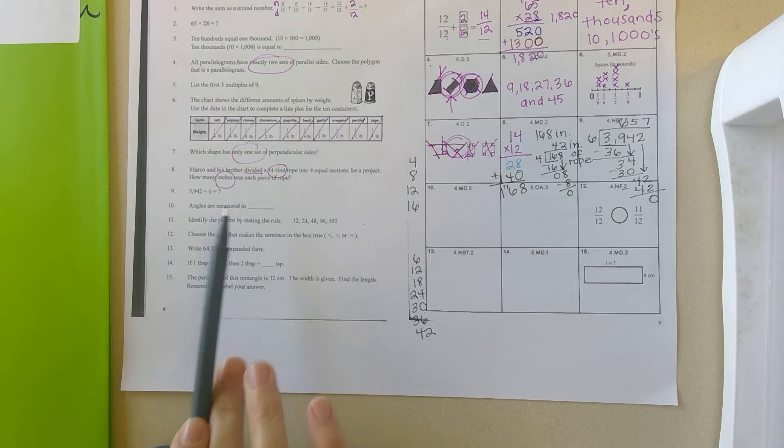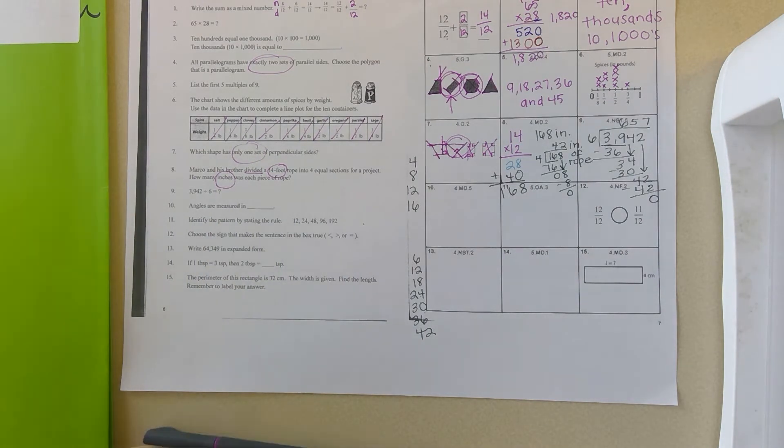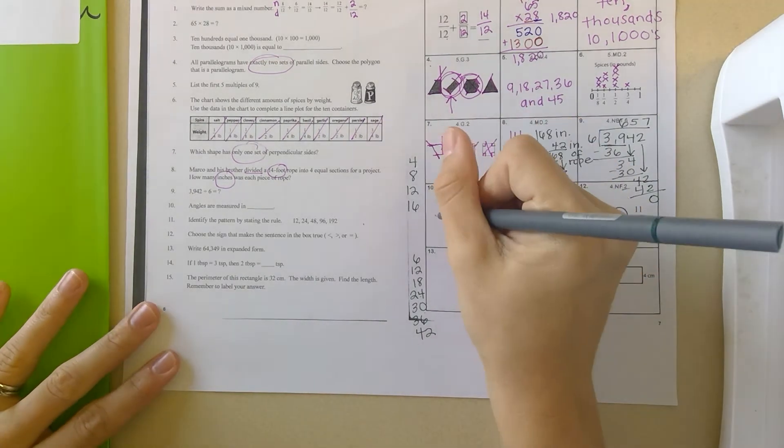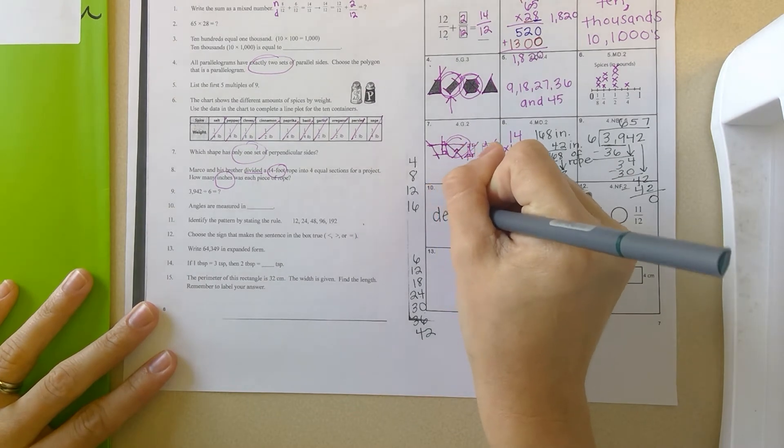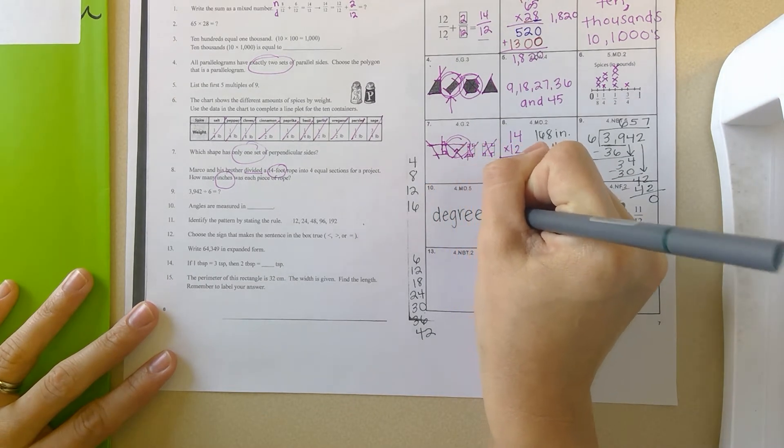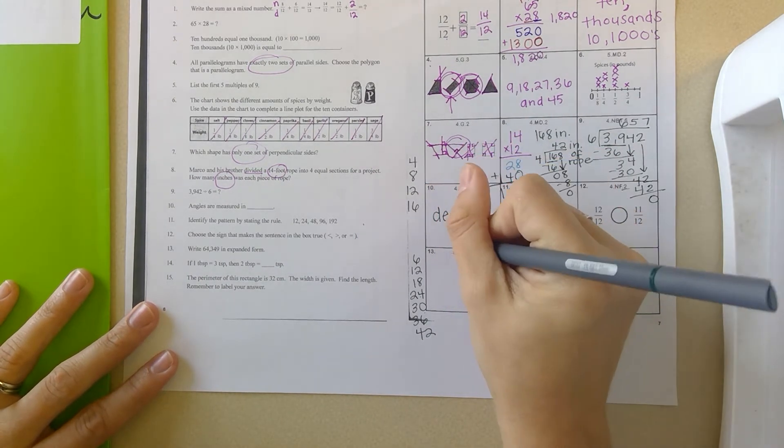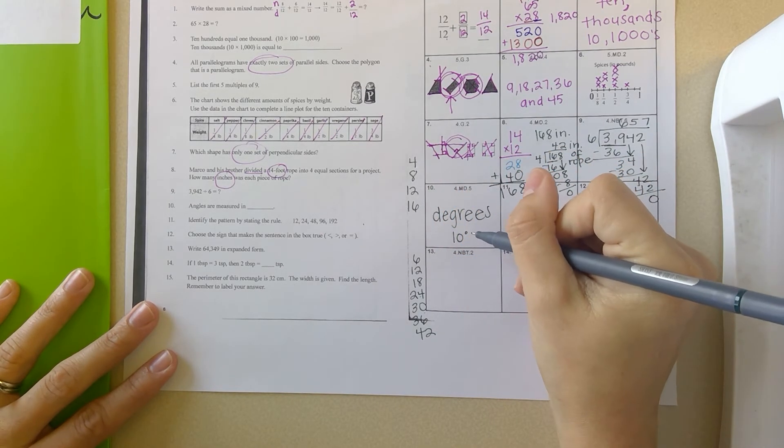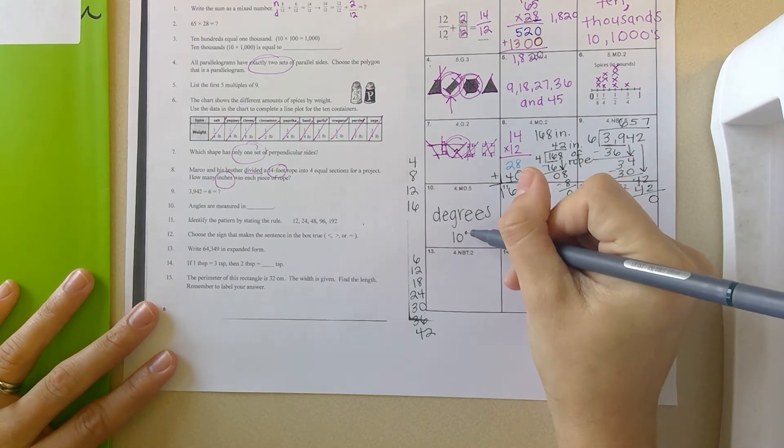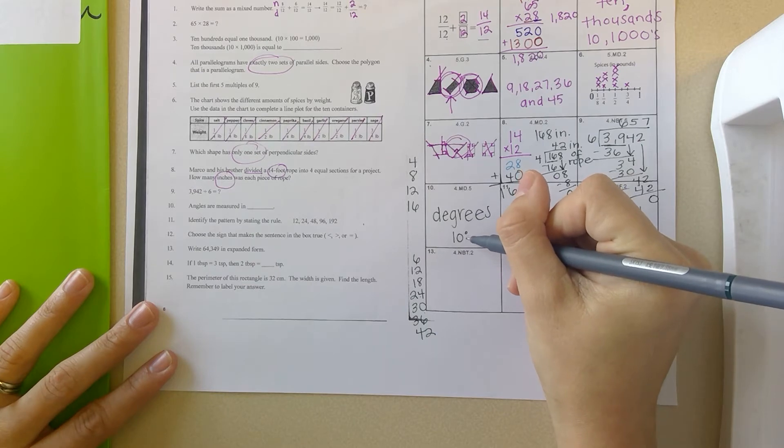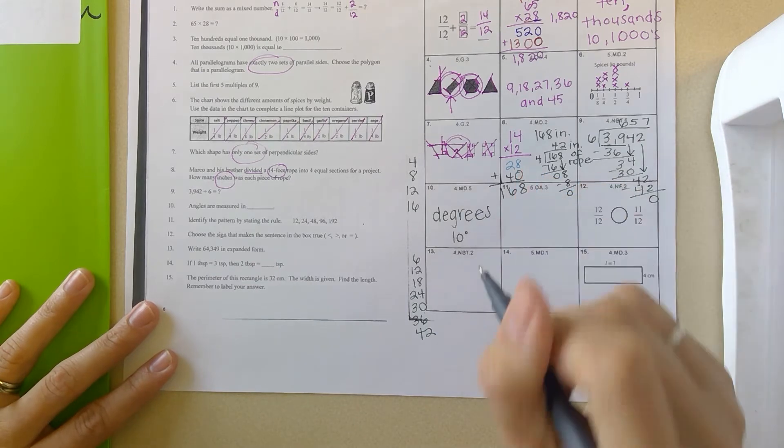Number 10, angles are measured in. So if you remember, we talked about that little symbol that we put beside the numbers that are in angles measurement. We call those degrees. So for example, if I was saying 10 degrees, like number 10, it would be 10, and there's a little circle at the top. It has to be a very small circle, and it goes towards the top of the number, not in the middle, not at the bottom. It goes at the very top.